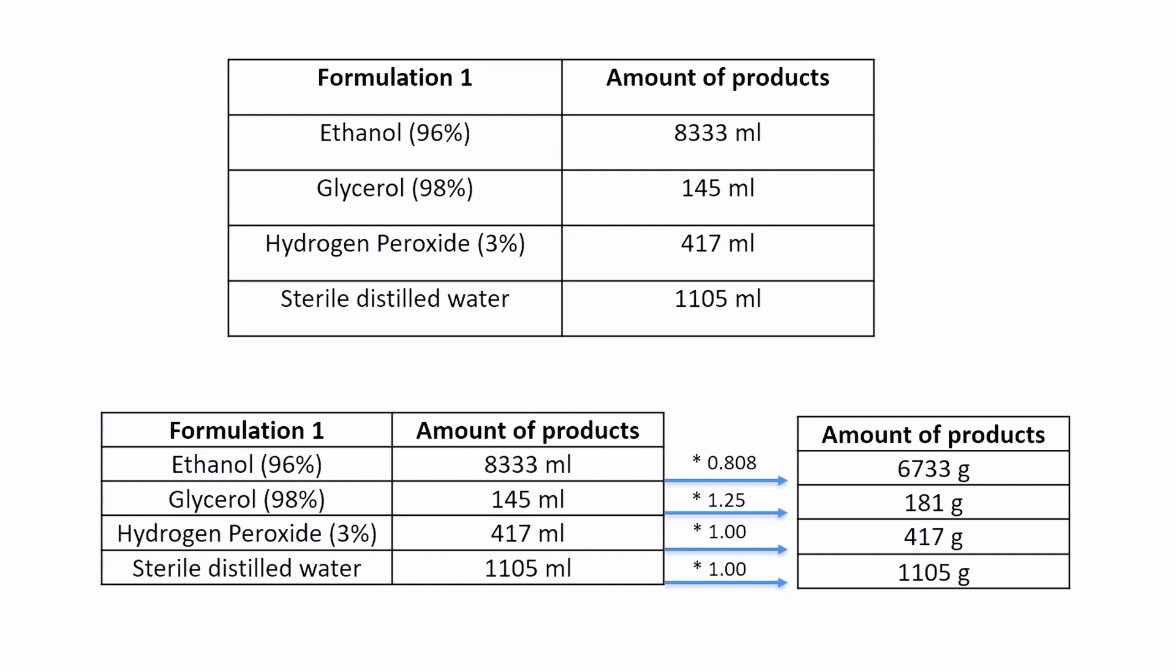It should be noted that it is possible to prepare a final volume different from 10 liters. This can be done by proportionally adjusting the quantities of raw materials as shown in the attached document. In addition, in the case that only reagents with different concentrations are available, or if it is needed to measure the quantities of reagents by weight, you can refer to the attached document. This will allow you to produce exactly the same solution.